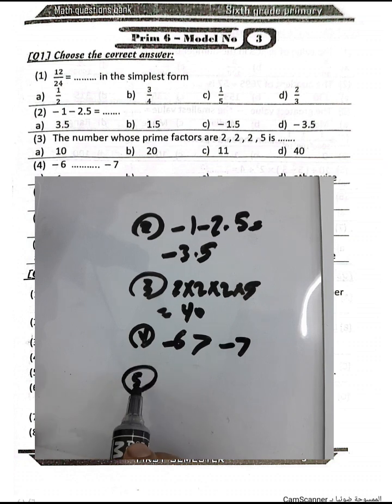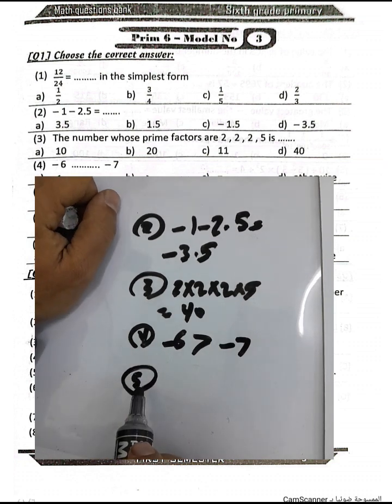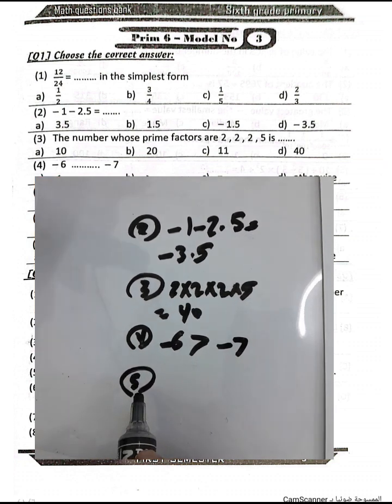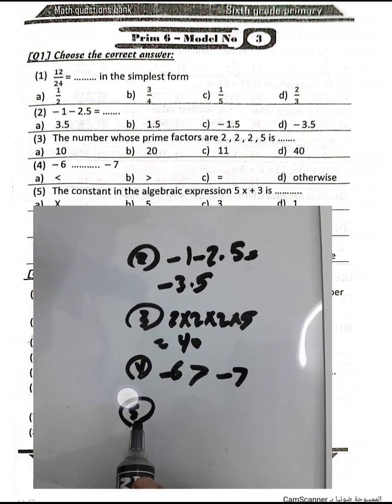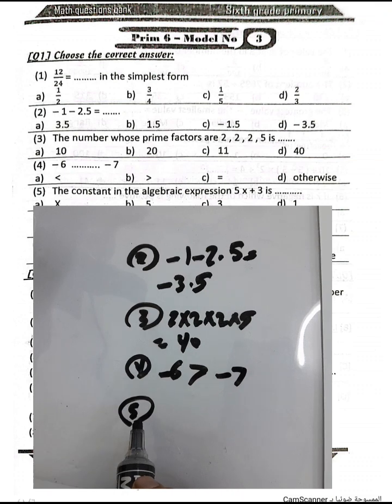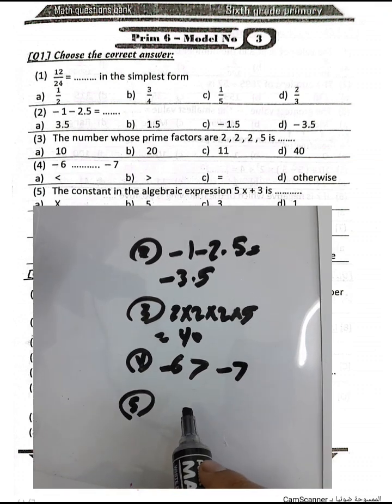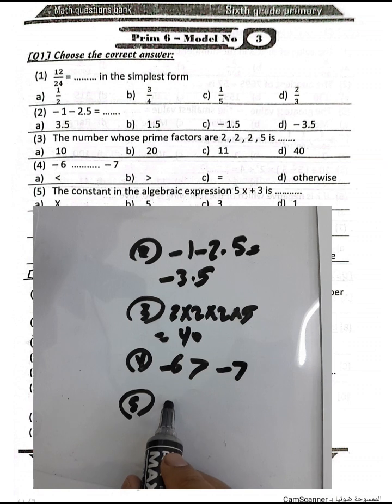Question number 5: The constant in the algebraic expression 5x plus 3 — the constant here is 3.